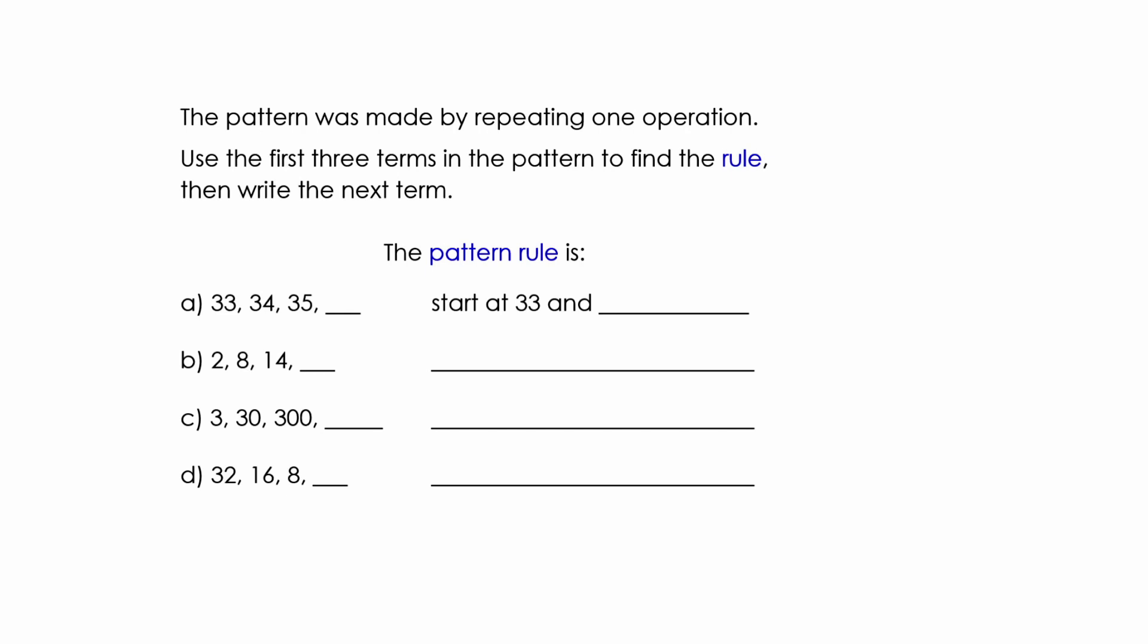So the pattern was made by repeating one operation. Let's figure this out. Which operation is it? Well, in this case here, it's addition. Add one. The next term is thirty-six. Start at thirty-three and add one.